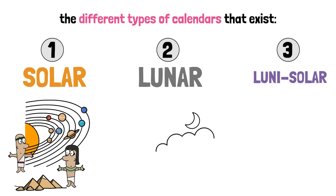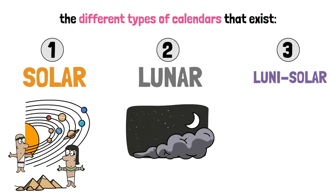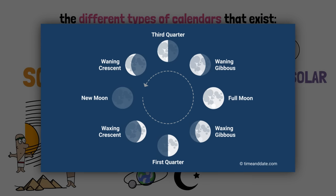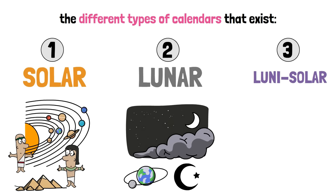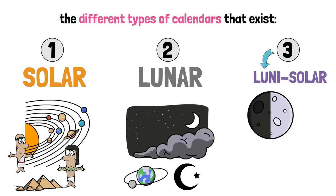Another type is a lunar calendar, whose months correspond to the cycles of the moon phases. The Islamic calendar and the Maori calendar are both lunar calendars. But there are very few calendars worldwide, especially in modern times, that are exclusively lunar. Most of the ones that aren't exclusively solar are lunisolar, which is the third category — precisely a mix of the two.